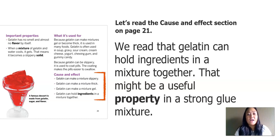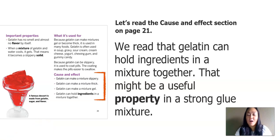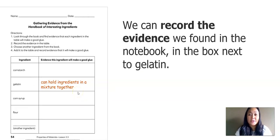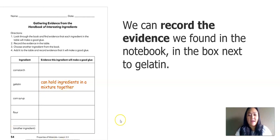Listen up — cause and effect. Gelatin can make a mixture slippery. Gelatin can make a mixture thick. Gelatin can make a mixture gel. And lastly, gelatin can hold ingredients in a mixture together. So from what I read, I know that gelatin can hold ingredients in a mixture together — that might be a useful property in a strong glue mixture. So I'm going to go back to the worksheet and record that evidence. Here I wrote: can hold ingredients in a mixture together, for gelatin.